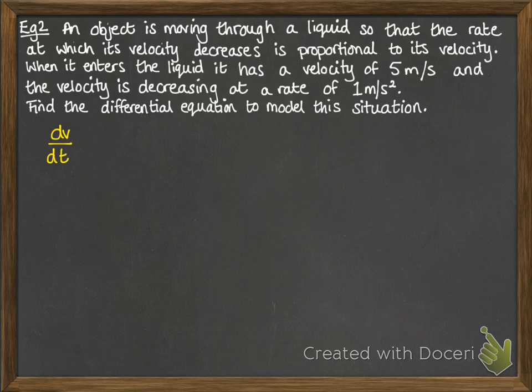So we're talking about the rate of change of the velocity, so how velocity changes over time, so we can refer to that as dv by dt. We know it's decreasing, so that'll be a negative. And that is proportional to the velocity, and we use that little symbol there to represent proportion.